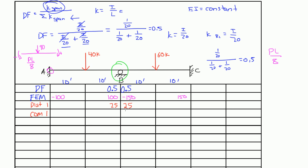Your carryover moments — what you do is carry over half of the moment found at joint B. So half of 25 is 12.5, and usually carryover moments we draw an arrow. There's no sign change here, so it's just 25 divided by 2. Same thing on the right side: we carry over half of the moment from the right side of joint B, which is 12.5, and they're both positive.